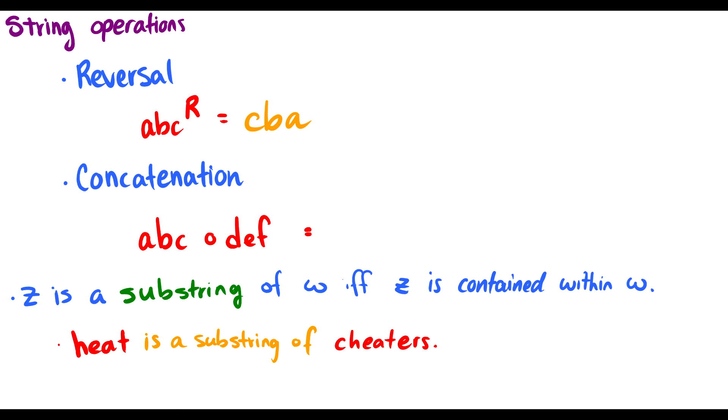We can also concatenate strings. This means we can take the string ABC, and then we concatenate it with DEF. Then we get the string ABCDEF. It just means we join two strings. The second one is directly after the first.